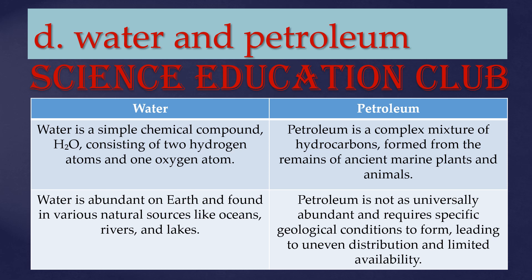Water is a simple chemical compound H2O consisting of two hydrogen atoms and one oxygen atom. Petroleum is a complex mixture of hydrocarbons formed from the remains of ancient marine plants and animals. Water is abundant on earth, found in oceans, rivers, and lakes. Petroleum is not as universally abundant and requires specific geological conditions to form, leading to uneven distribution and limited availability.